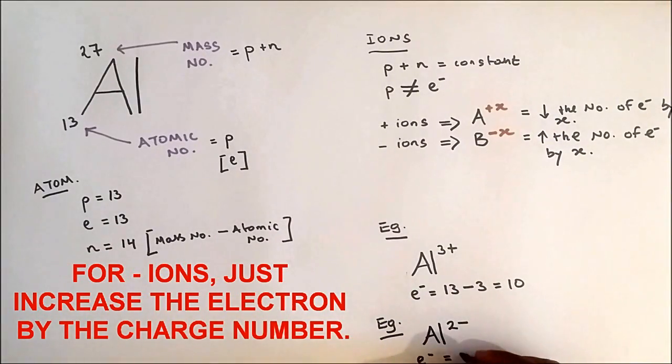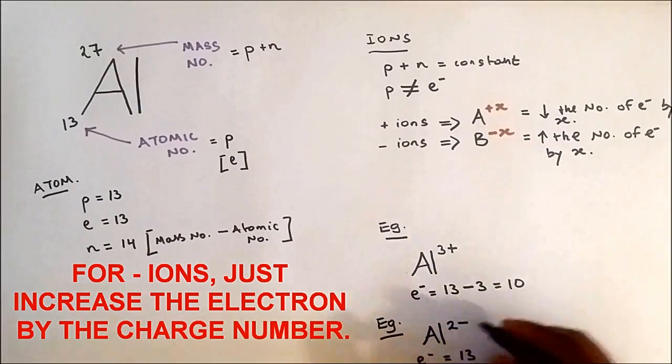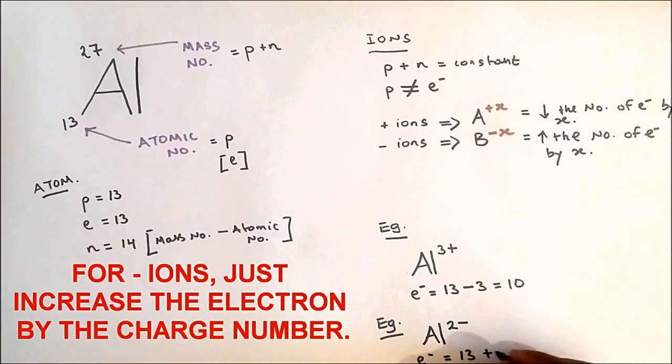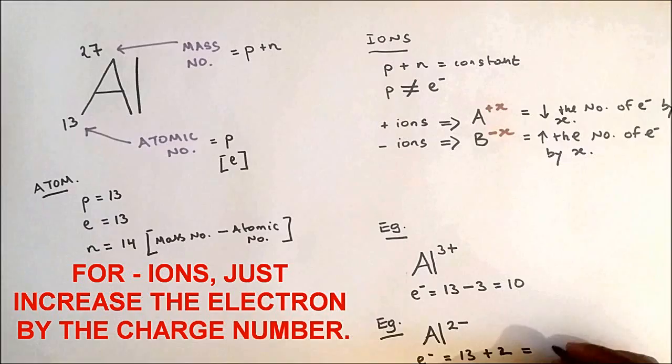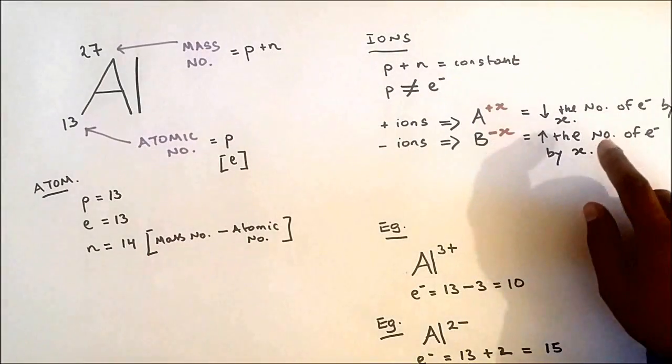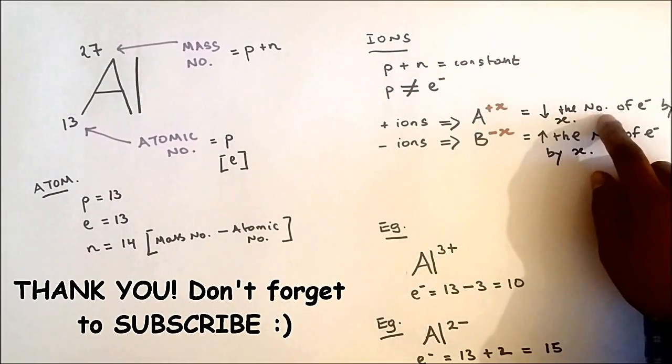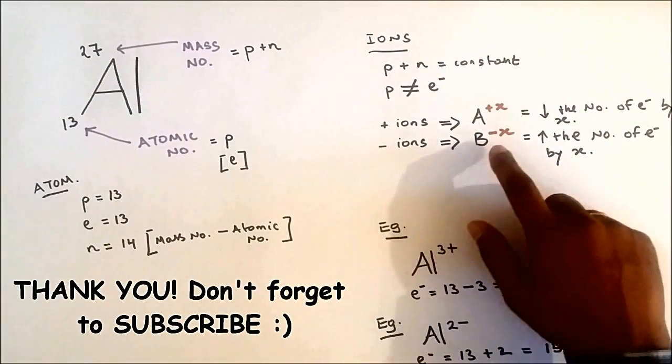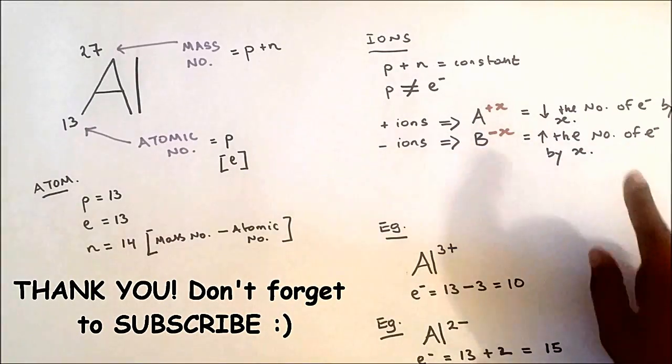Now electrons normally is 13, and if it's minus 2, I need to increase the number, so plus 2, which gives me 15 electrons. So this is how you do it. I repeat again: if you have a positive ion, just decrease the number by such x number, and if you have a minus, just increase the number of electrons by whatever the number is found on the x.